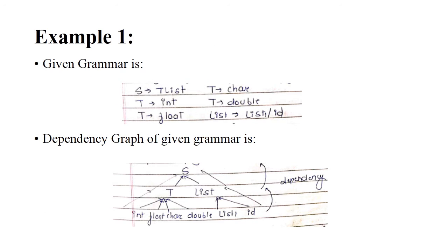Let's see one example. If you know how a parse tree is generated and how to draw it, it is very easy to solve. Suppose the given grammar is: S → T list, T → int, T → float, T → character, T → double, and list → list1 comma id. The dependency graph of this grammar is generated in the form of a parse tree: S → T list, T → int/float/character/double, list → list1 comma id.